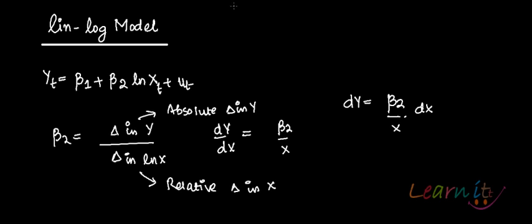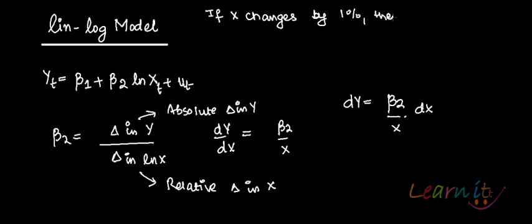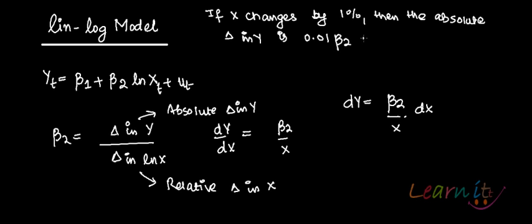You interpret this model in this way: if x changes by 1%, then the absolute change in y is 0.01 times beta 2 units. You just divide it by 100.